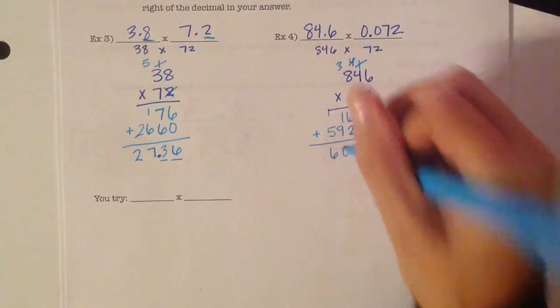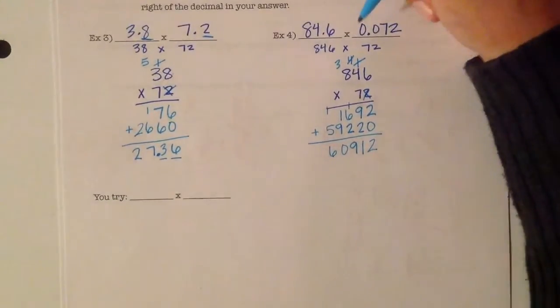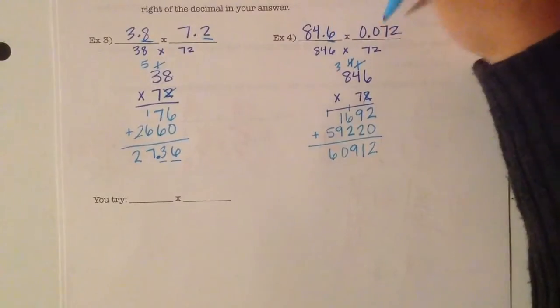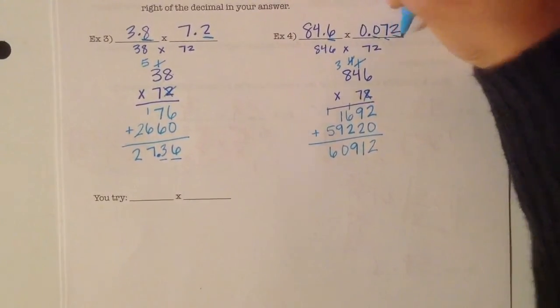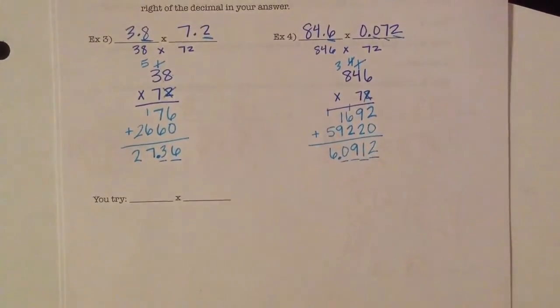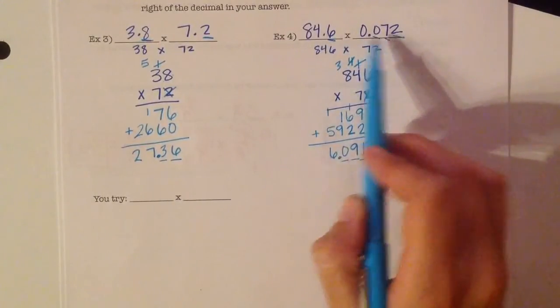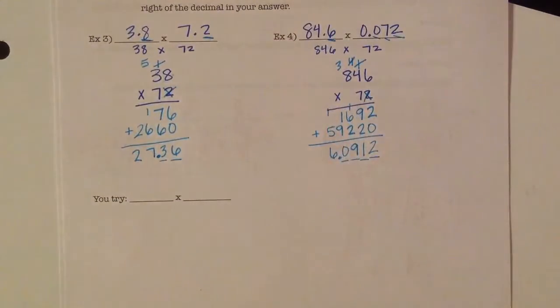1 plus 5 is 6. So again, we've got to go back and see how many digits are to the right of the decimal point. We've got 1, 2, 3, 4. Which means I should have 1, 2, 3, 4 decimals in my answer. I multiplied 84.6 times a really small number. So the number is going to be smaller than it.